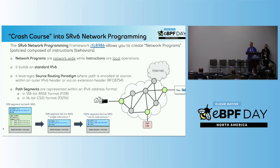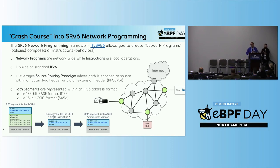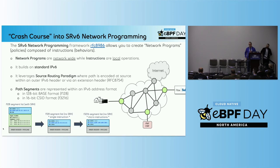It's built based on standard IPv6 — it leverages IPv6 as a common denominator in transport. Basically, you connect those small instructions together to create an end-to-end program. It uses a source routing paradigm, meaning that at the source of the domain of segment routing, you encode all the places you want to visit in your network, and it will give you the actual program you wanted to adhere to. This is done through either an extension header, which is also a standard RFC 8754, or through basic use of IPv6 other IP headers. Those instructions are identified or encoded into what we call path segments or segment IDs, which are represented in an IPv6 format.